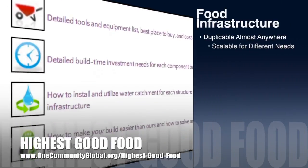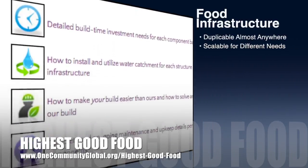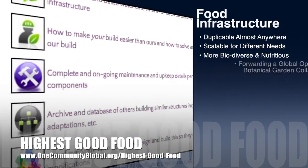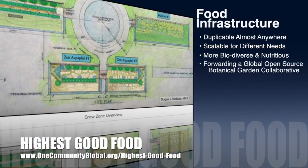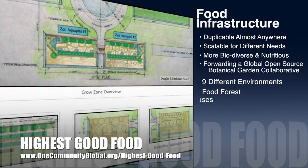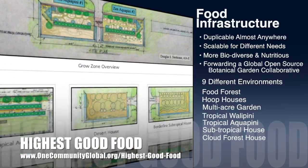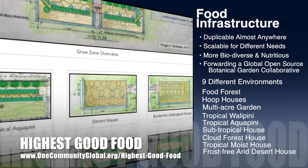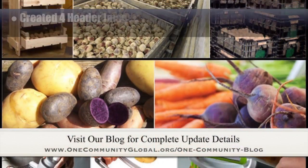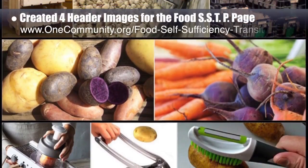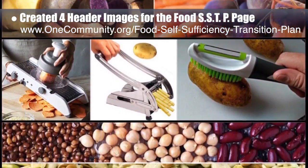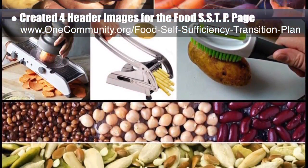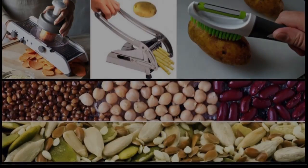One Community's approach to Highest Good Food is duplicable almost anywhere, scalable for different needs, more biodiverse and nutritious, part of forwarding a global open source botanical garden collaborative, and includes nine different free shared and duplicable growing environments. This week the core team created four additional header images for the food self-sufficiency transition plan page, which is now 93% complete.